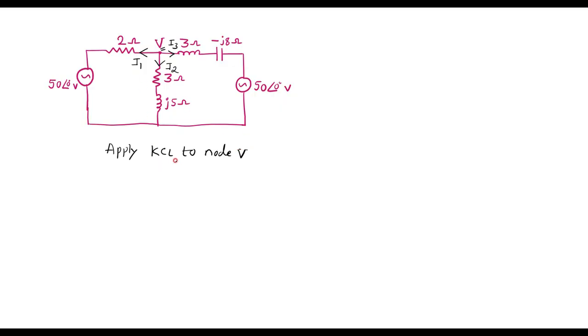We know that KCL is nothing but incoming current is equal to outgoing current, or algebraic sum of incoming current is equal to algebraic sum of outgoing current. Here I1 is leaving the node, I2 is leaving the node, and I3 is leaving the node. So no incoming current.